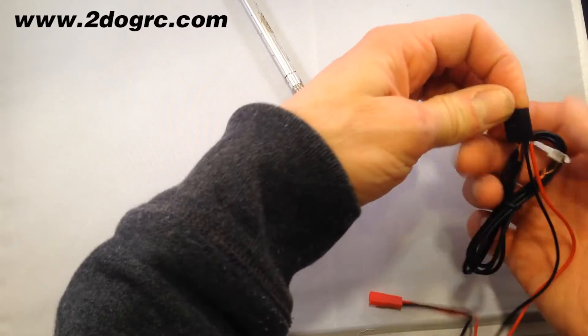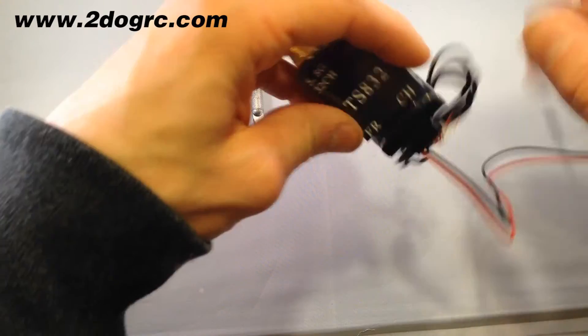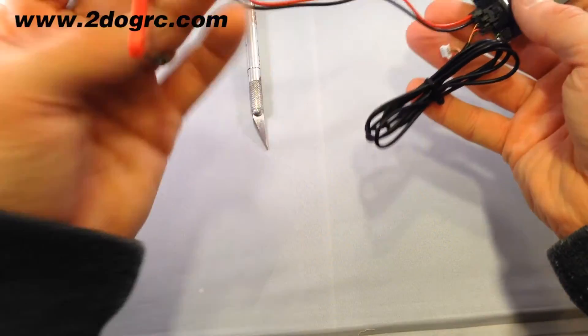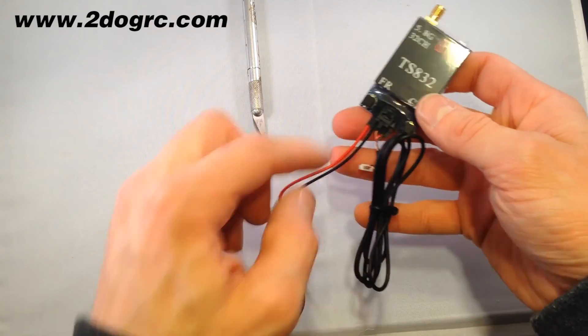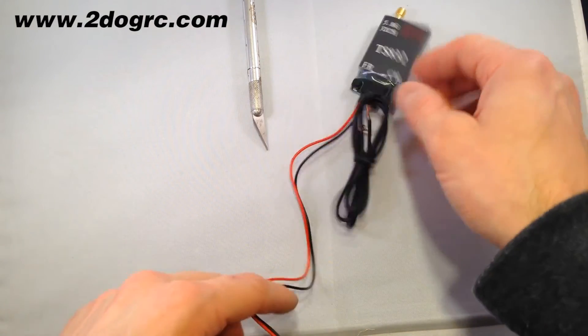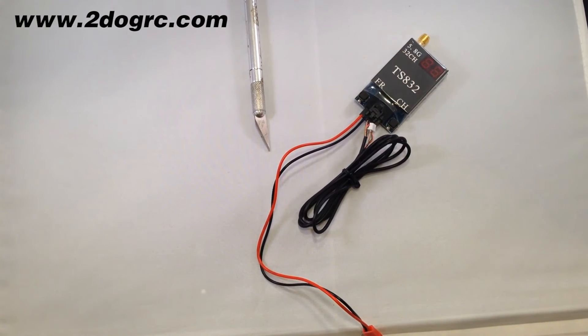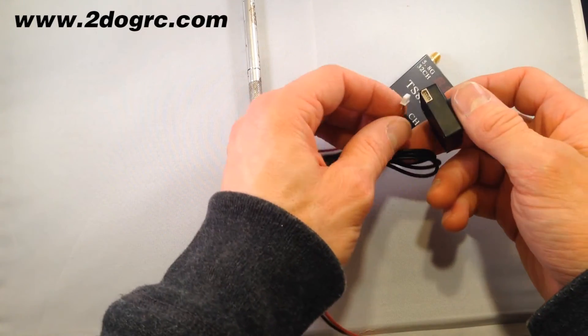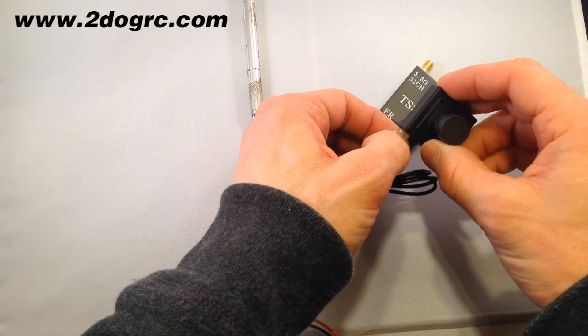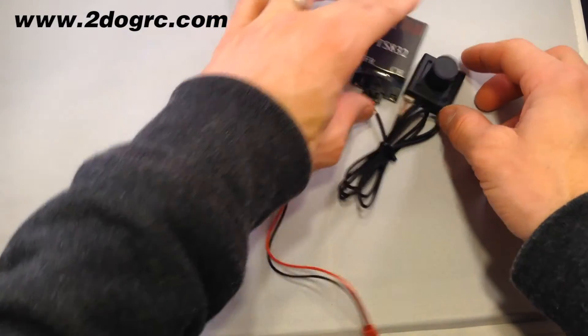And now this plugs into here. And now you've got your power. This is going to power both your transmitter and the camera. There's a power out through here. So then you hook this into your little camera. Here. And look at that. There's your no solder FPV setup.